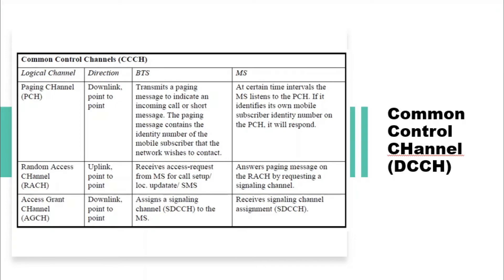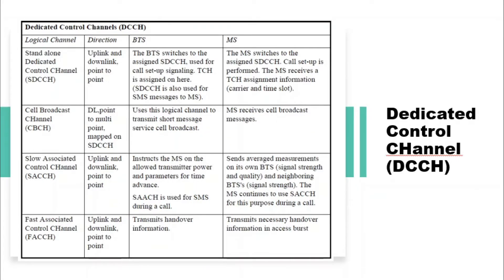The Access Granted Channel (AGCH) serves to inform a particular mobile station on the downlink carrier that access to the system is allowed. At this stage, the mobile station and Base Switching Subsystem are ready to begin the call setup procedure.